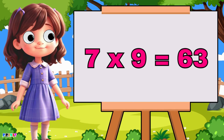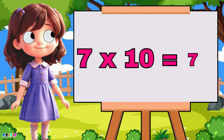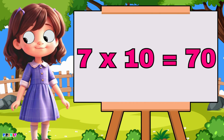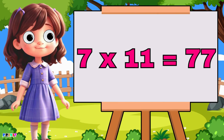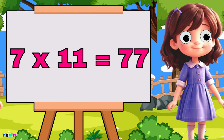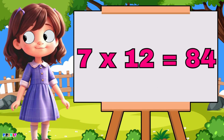Seven nine's are sixty-three, seven ten's are seventy, seven eleven's are seventy-seven, seven twelve's are eighty-four.